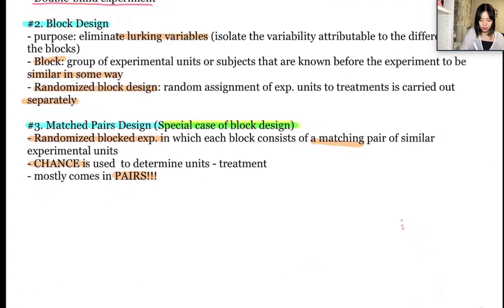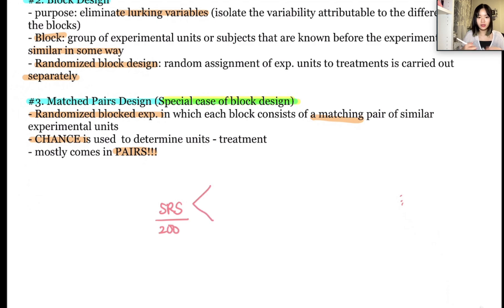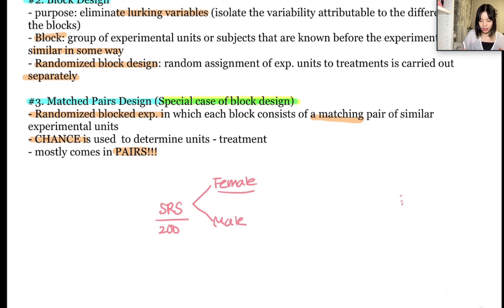Let's quickly construct one experiment to get a better feeling of what block design and matched pairs design look like. Let's say you did SRS and the researchers gather 200 participants. Then they're going to divide them into blocks — for example, by applying the standard of gender, basically separating the participants into female and male, where female and male would each be one block.